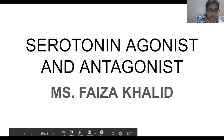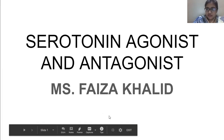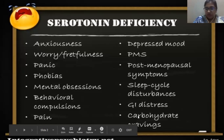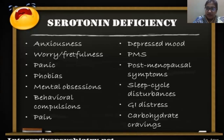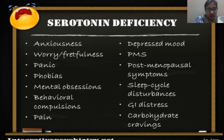Today we are going to discuss serotonin agonists and antagonists. We have already discussed what can be the effects if serotonin is less in the body. If serotonin is deficient, a person would become anxious, worried, and have panic, phobias, mental obsessions, behavioral compulsion, pain, depressed mood, PMS, post-menopausal symptoms, sleep cycle disturbances, GI distress, and carbohydrate cravings.